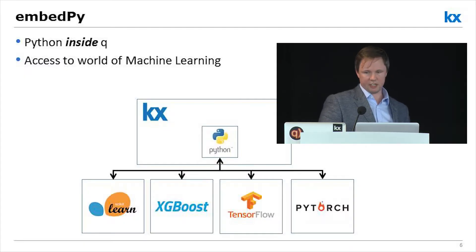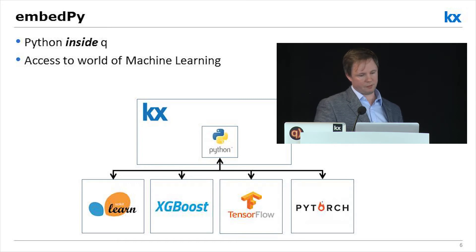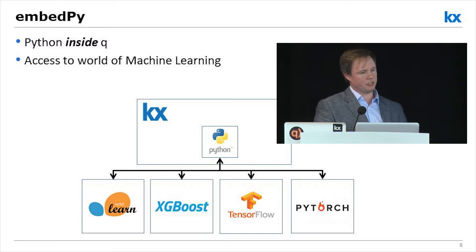With EmbedPy, we get Python inside Q. EmbedPy allows us to import Python libraries and modules directly into Q and call them as callable Q functions, as if they were native Q functions. In the past, if someone wanted to do machine learning using KDB data with Python, they would have to export the data out of KDB — probably do a CSV file, load it into Python — and it works, but it's ugly. With EmbedPy, we can pass Q objects directly to Python functions as arguments and get Q data at the back end. It's all in one process, much more efficient, much less copying, much less data transfer, and much more elegant. When we have Python inside Q, we get access to this world of machine learning.